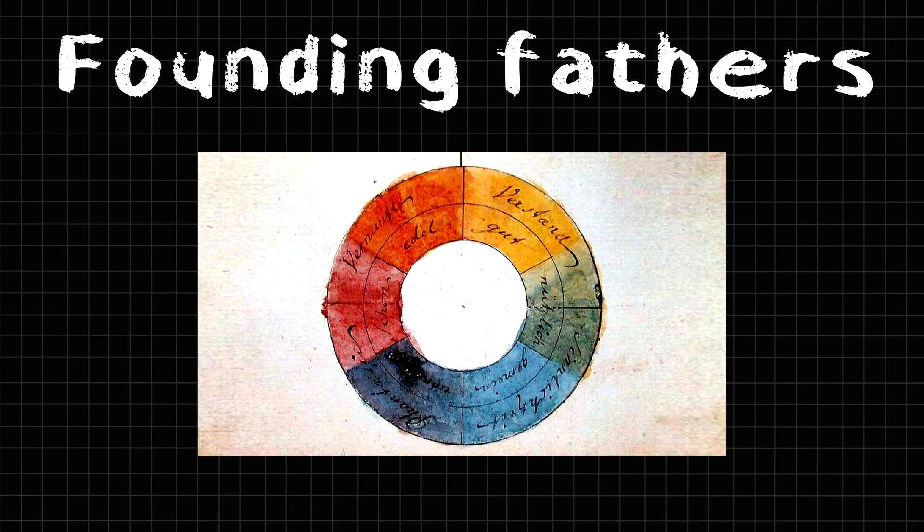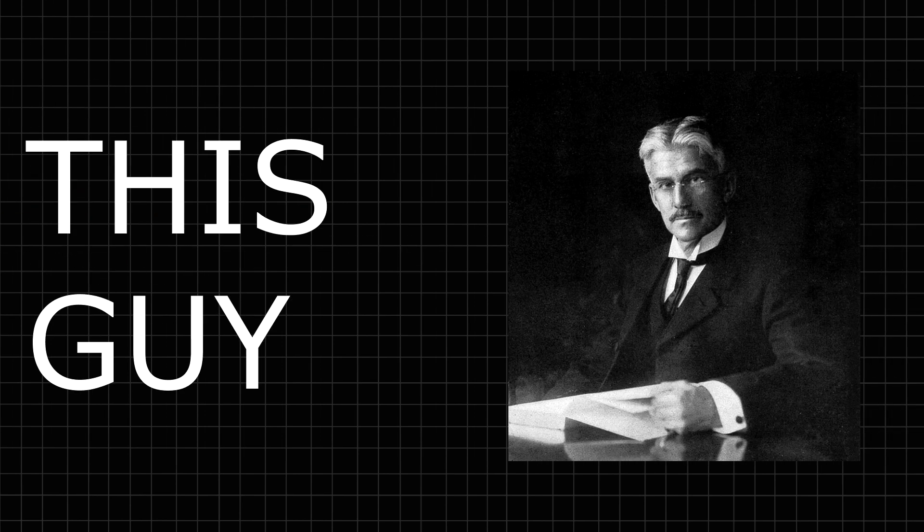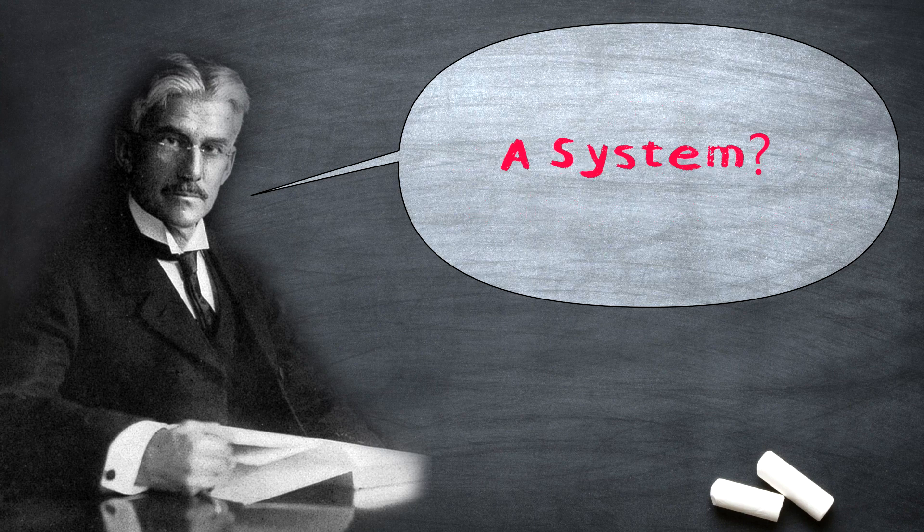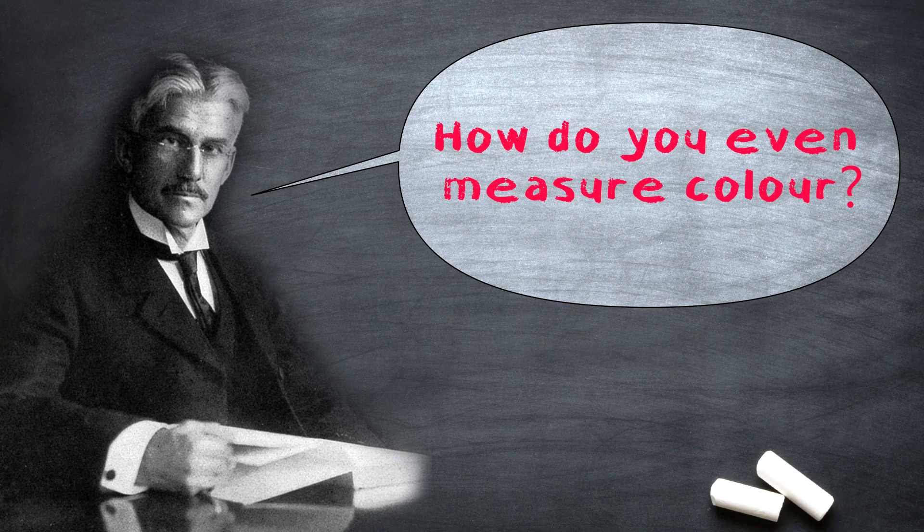So the color wheel founding fathers are Newton and Goethe, but later additions would be made in the 20th century with our friend Munsell. An artist and teacher figured it would be useful to have a systematic method to explain and teach color. A method that would make color measurable, but how do you even measure color?